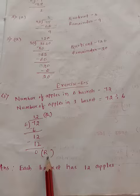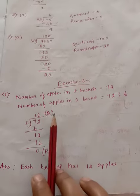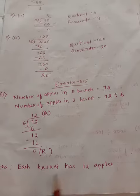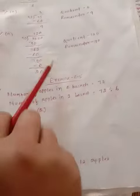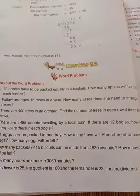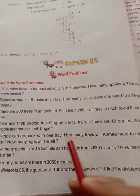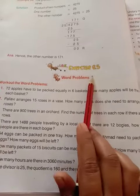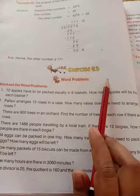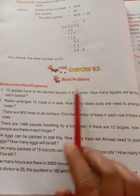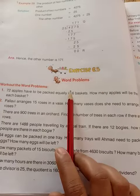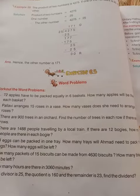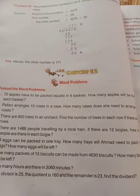So our remainder is 0 and our quotient is 12. So each basket has 12 apples. Like that only, children, you will complete your exercise 6.1, that is word problems in division. Thank you children. Have a nice day.